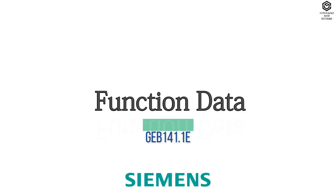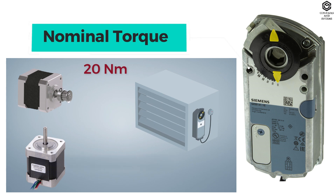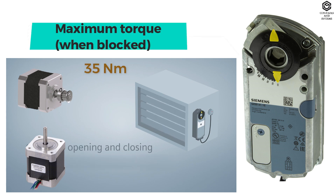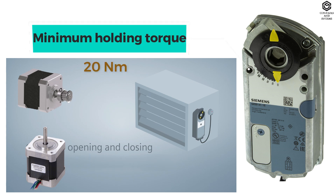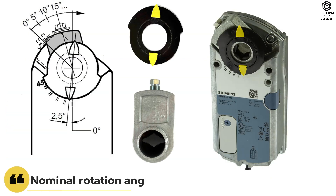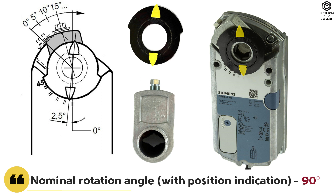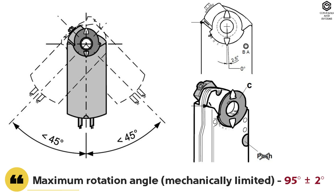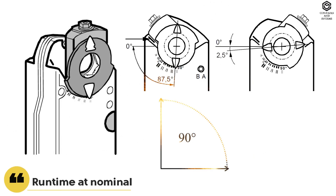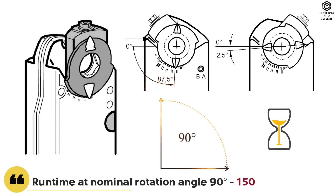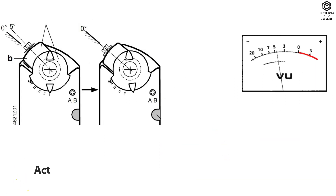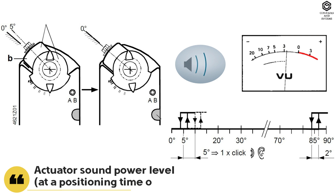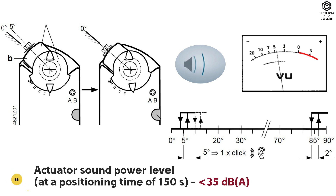Function data: nominal torque is 20 Newton meters, maximum torque is 35 Newton meters, minimum holding torque is 20 Newton meters. Nominal rotation angle with position indication is 90 degrees. Maximum rotation angle is 95 degrees (±2 degrees). Run time at nominal rotation angle of 90 degrees is 150 seconds. Actuator sound power level is less than 35 decibels.